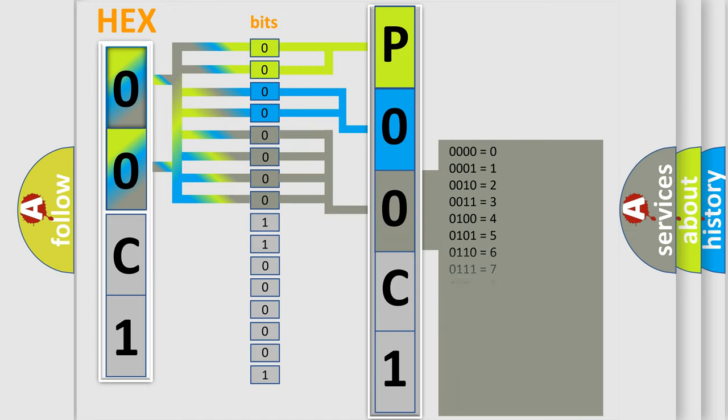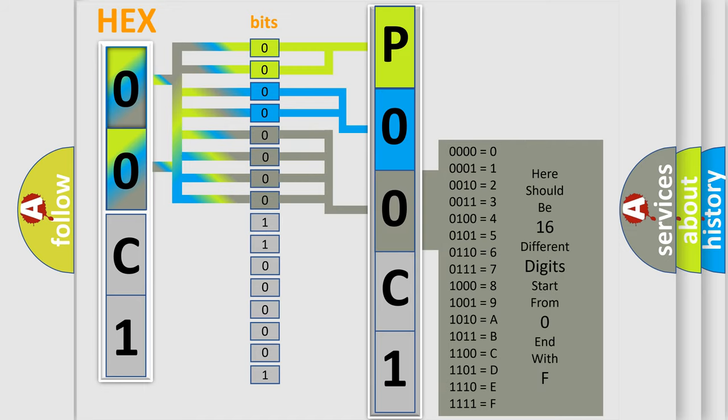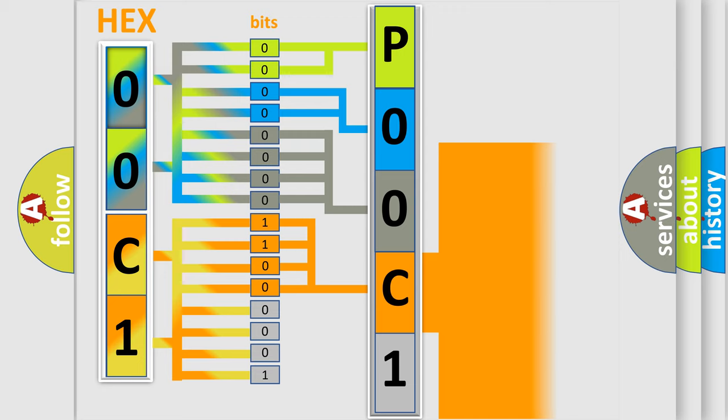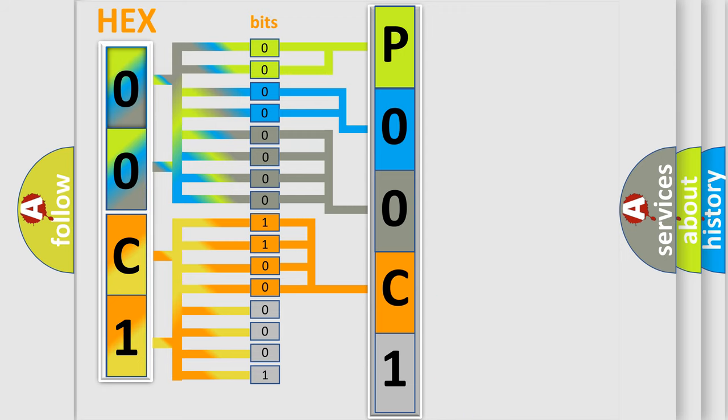The second byte is composed of a combination of eight bits. The first four bits determine the fourth character of the code, and the combination of the last four bits defines the fifth character. A single byte conceals 256 possible combinations.